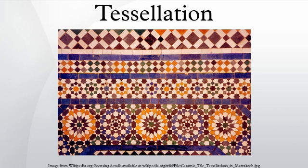Mathematicians use some technical terms when discussing tilings. An edge is the intersection between two bordering tiles; it is often a straight line. A vertex is the point of intersection of three or more bordering tiles. An isogonal or vertex-transitive tiling is a tiling where every vertex point is identical, that is, the arrangement of polygons about each vertex is the same. The sides of the polygons are not necessarily identical to the edges of the tiles. An edge-to-edge tessellation is any polygonal tessellation where adjacent tiles only share one full side — no tile shares a partial side or more than one side with any other tile. In an edge-to-edge tessellation, the sides of the polygons and the edges of the tiles are the same.